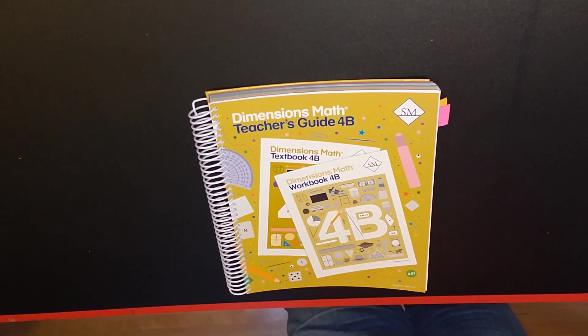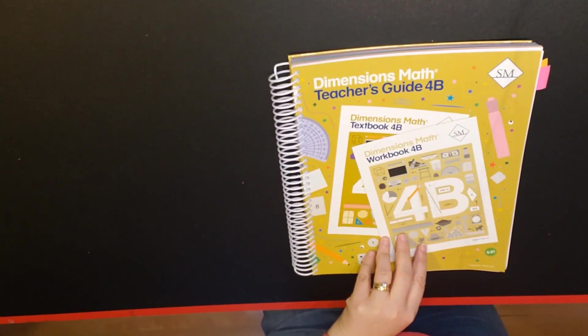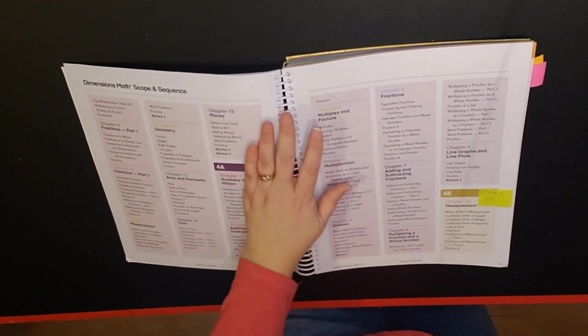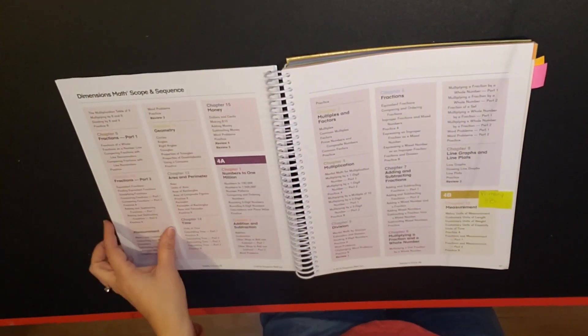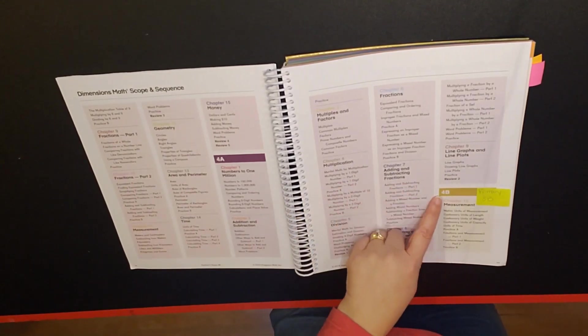On the Singapore math website there are placement tests and I would definitely encourage taking the placement test prior to purchasing any curricula within Singapore. In the dimensions math teachers guide there is a scope and sequence for all of the dimensions up through 5B and so again we're looking at 4B.